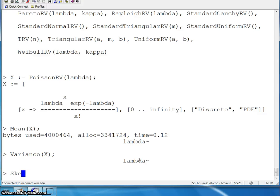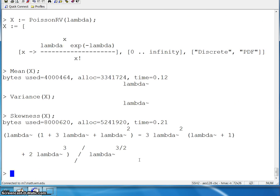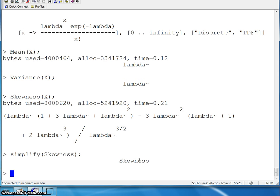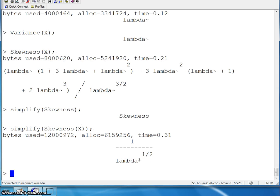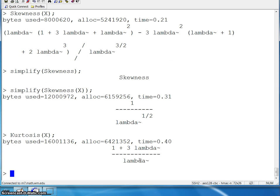Here is the skewness of x. In this case it computes a rather complicated expression. Sometimes the simplify function will work. If we simplify the skewness of x, sometimes this works and sometimes it doesn't. This time it worked: one over the square root of lambda, which is what we got on the previous page. Finally, the kurtosis of x turns out to be one plus three lambda divided by lambda.